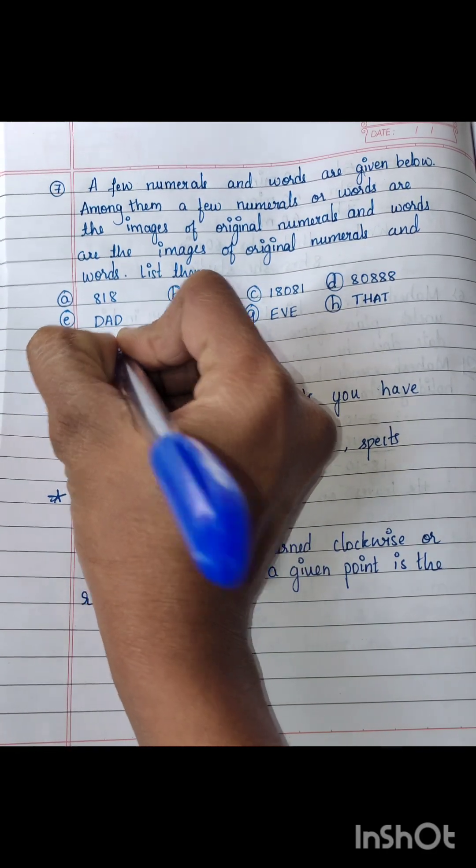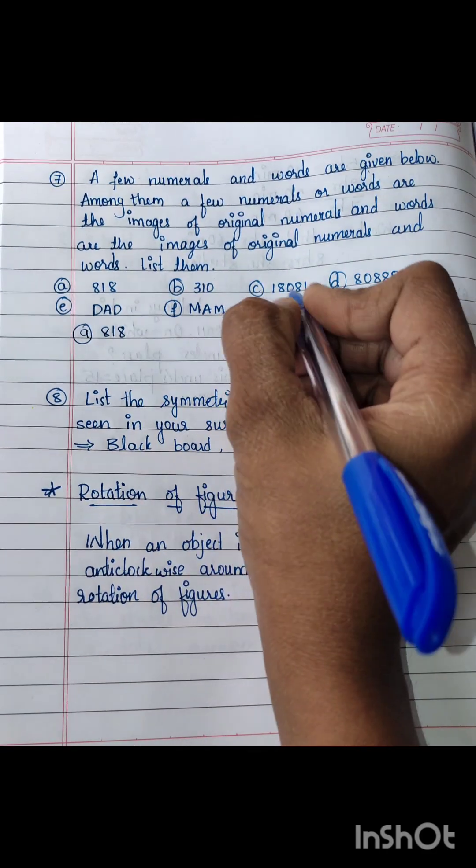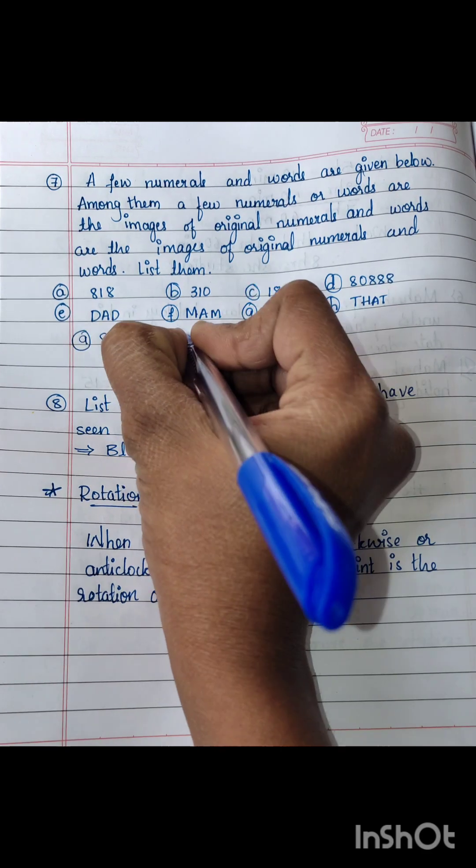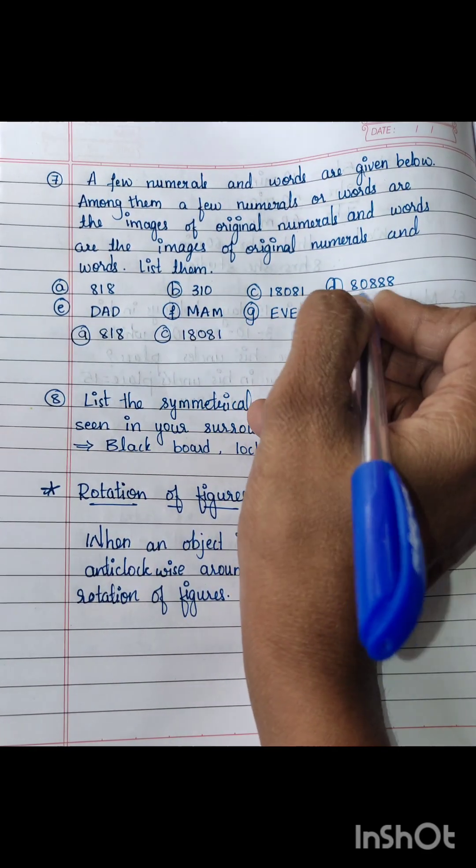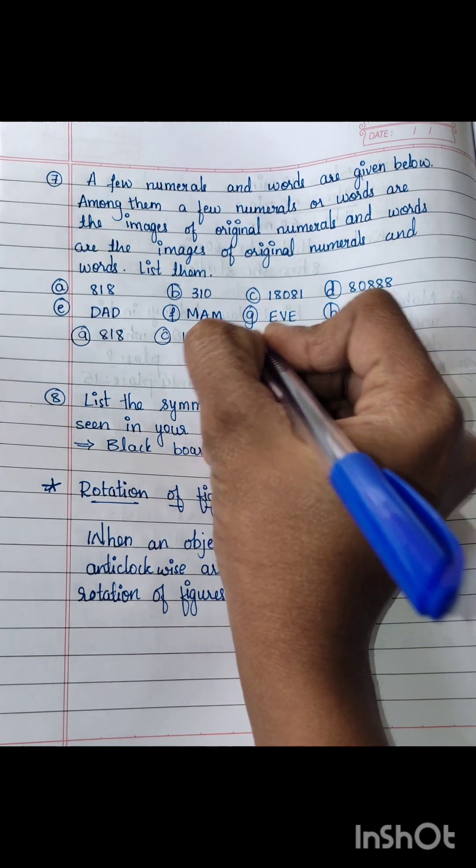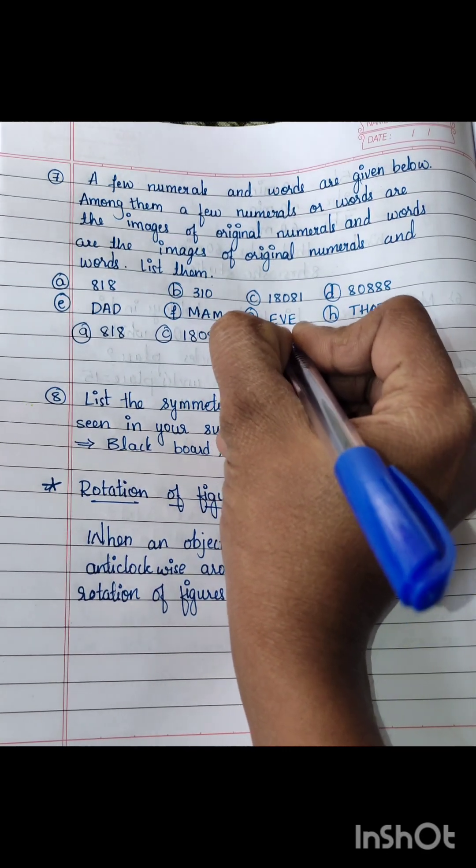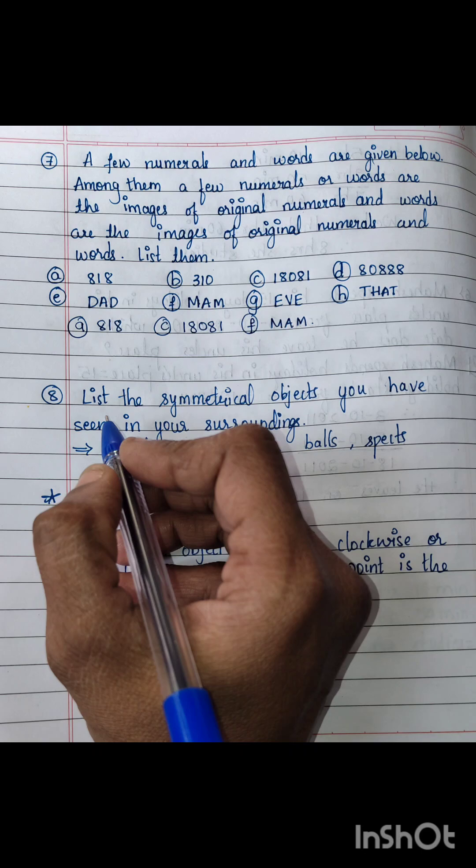Eight one, eight and C, one eight, zero eight, one and the last one is F that is M, A, M. Eight one, list the symmetrical objects you have seen in your surroundings.